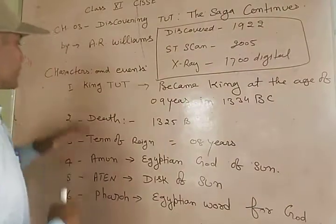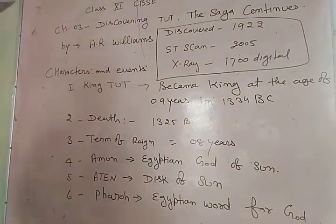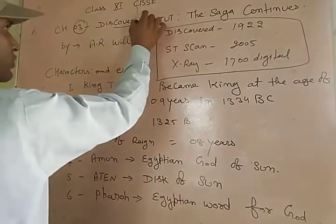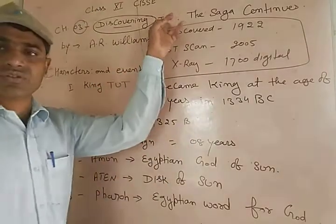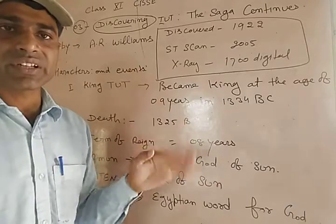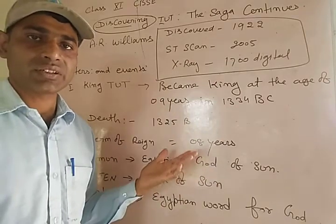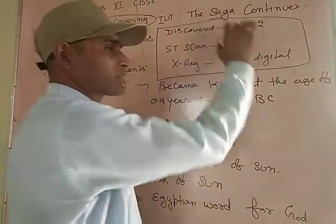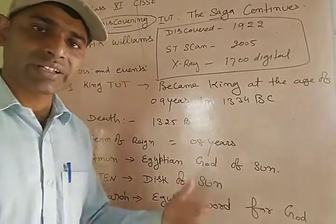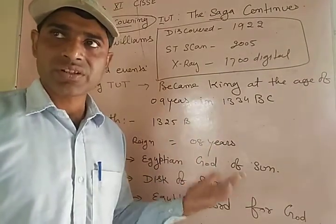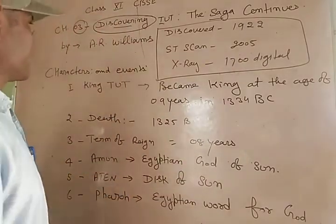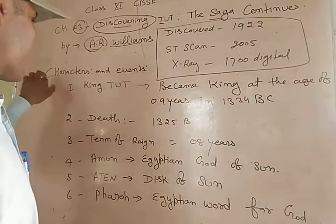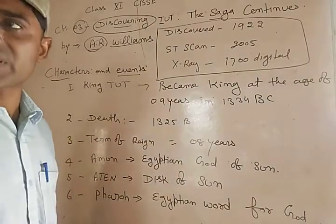This is Class 11th CBSC, Chapter 3: 'Discovering Tut: The Saga Continues.' 'Discovering' means finding out. 'Tut' is the name of the king of Egypt described in this lesson. The saga means the story in continuity. This lesson was written by A.R. Williams.